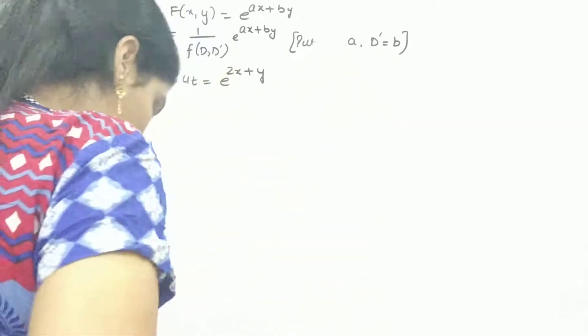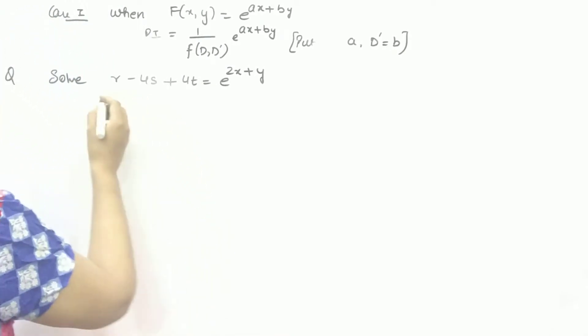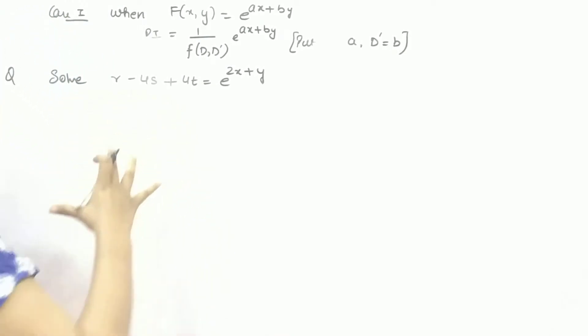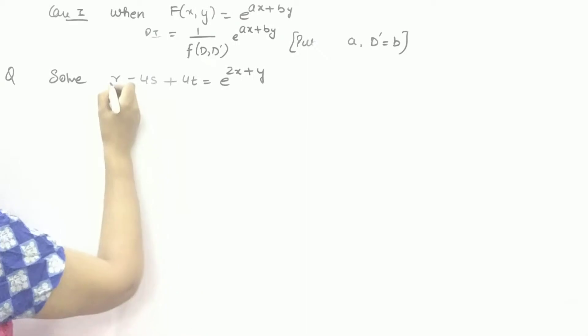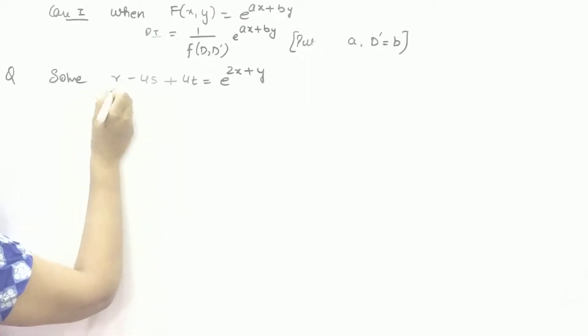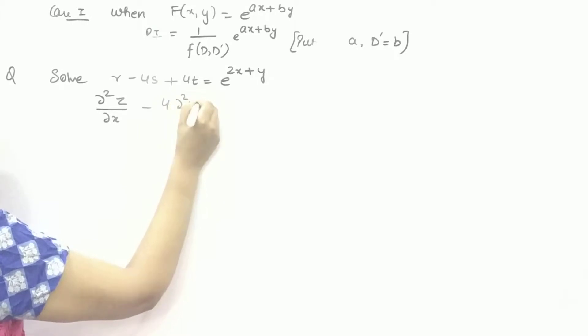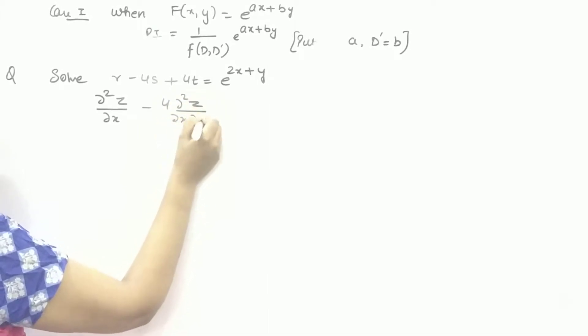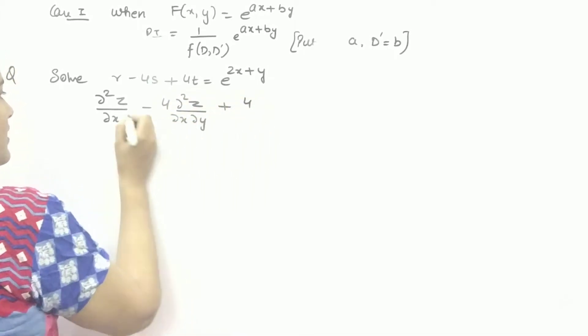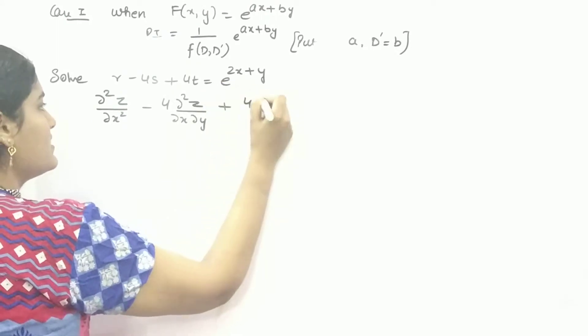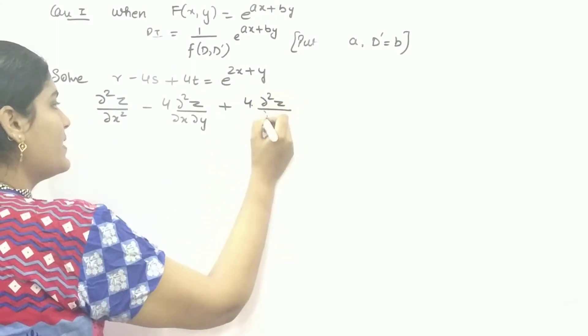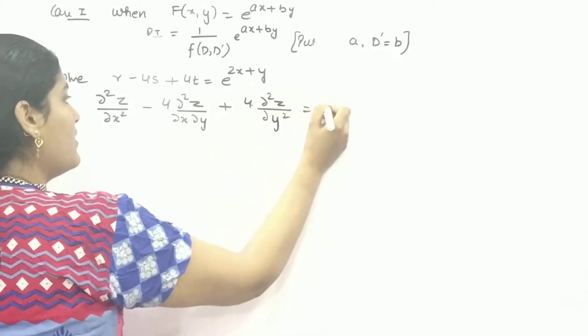So let's begin how we can do it. Here, you know what are R, S and T. R is partial double differentiation of your function with respect to X. S is double partial differentiation with respect to X and Y. And this is double partial differentiation with respect to Y.